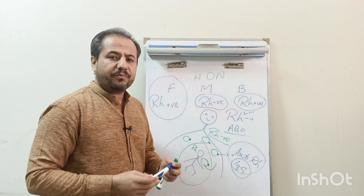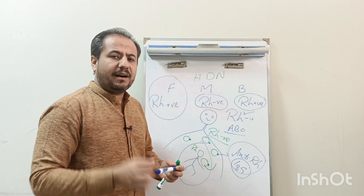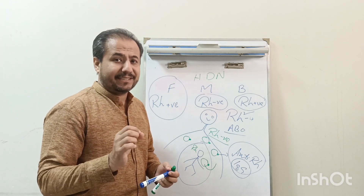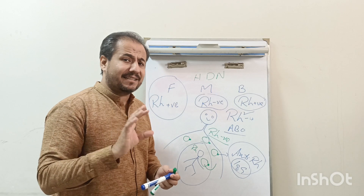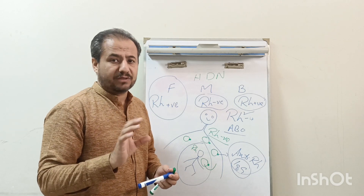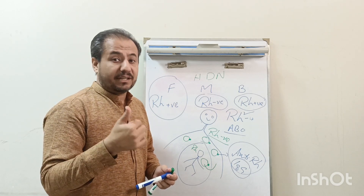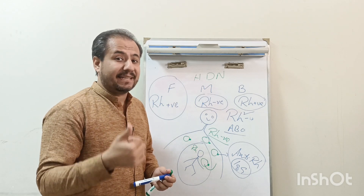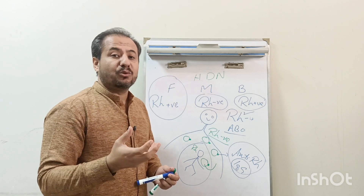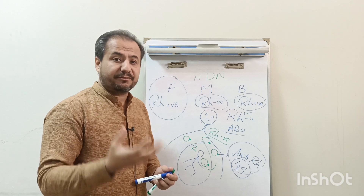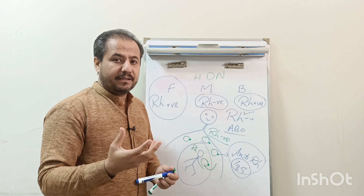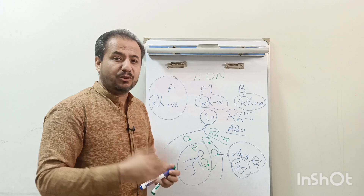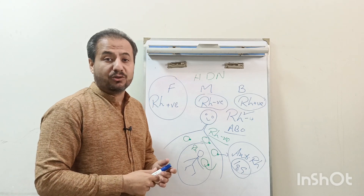IgG antibodies are those antibodies which react at 37 degrees centigrade. There are certain important properties of these IgG antibodies. Number one, and most important, these antibodies cross the placenta because these antibodies have receptors on the surface of the placenta. The other most important property of these IgG antibodies is that they are also known as opsonin antibodies.